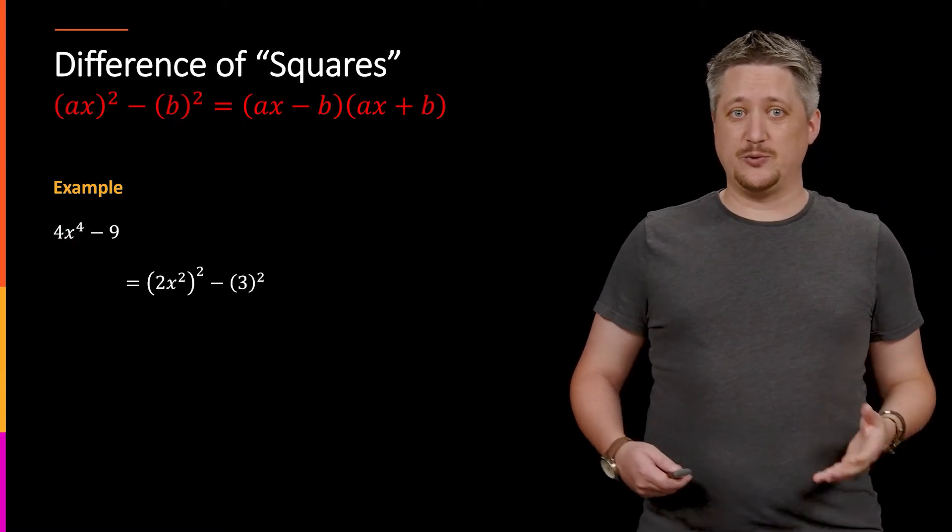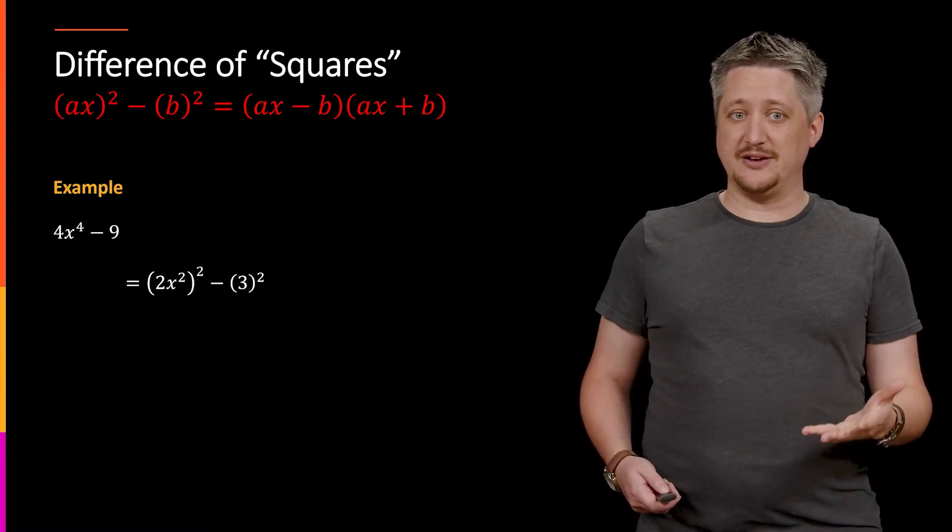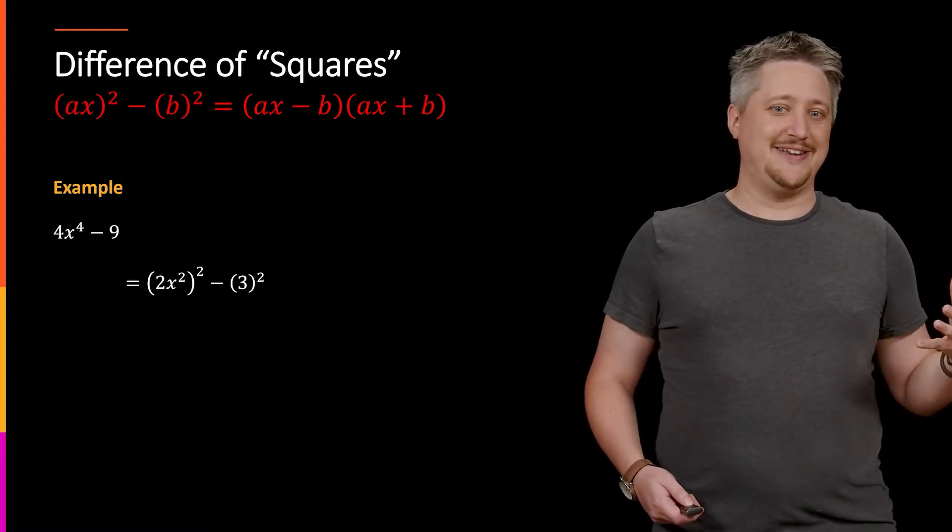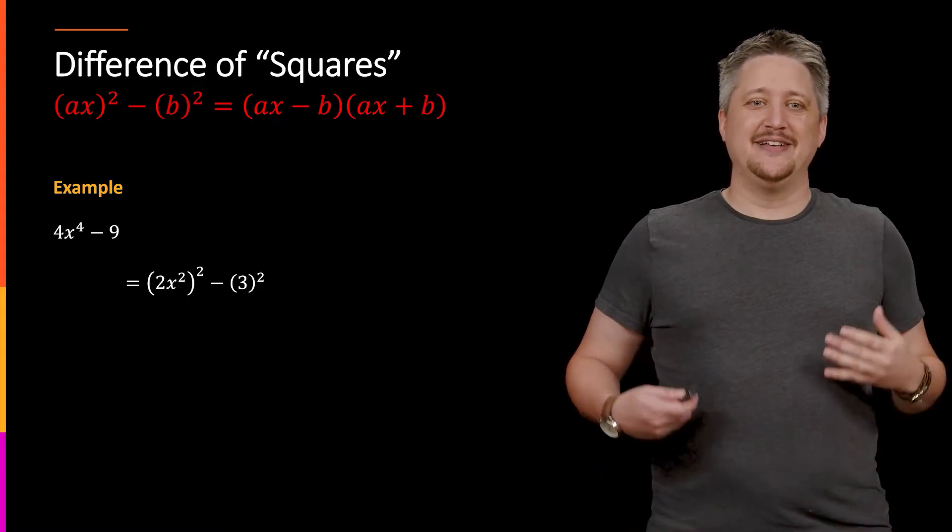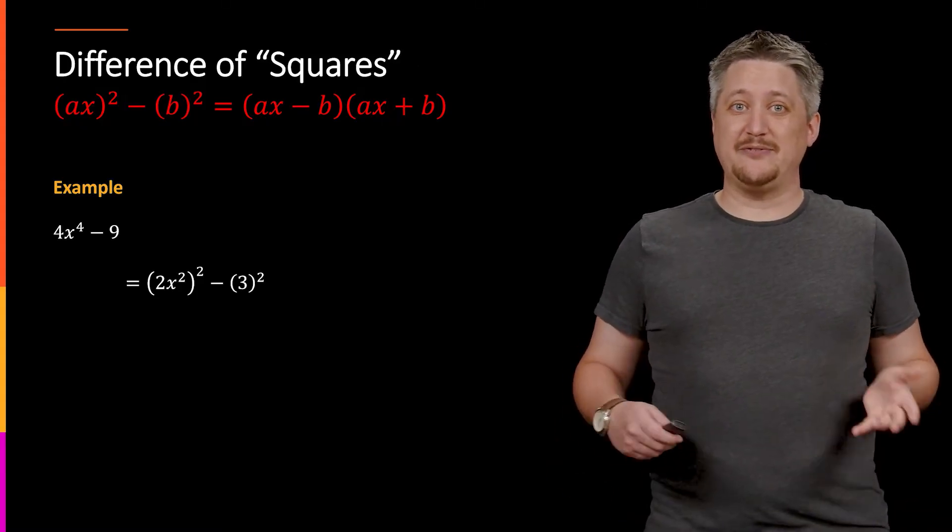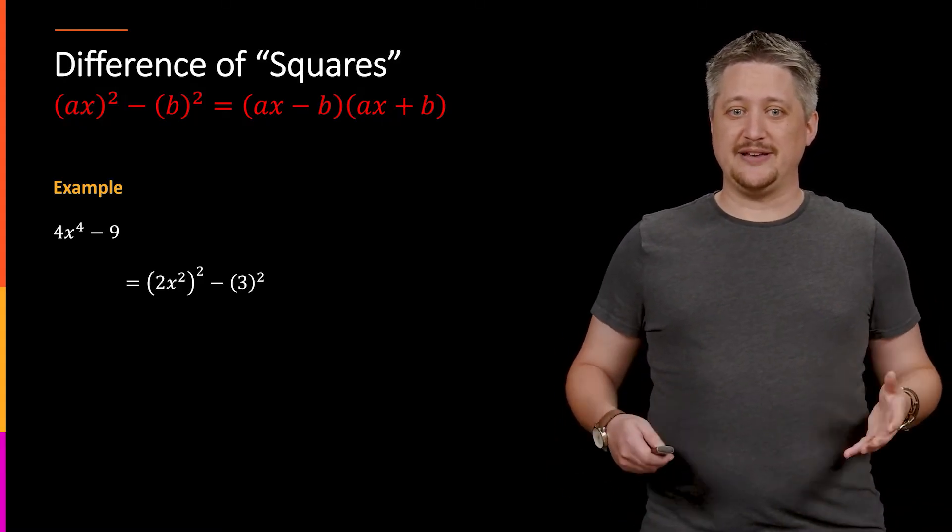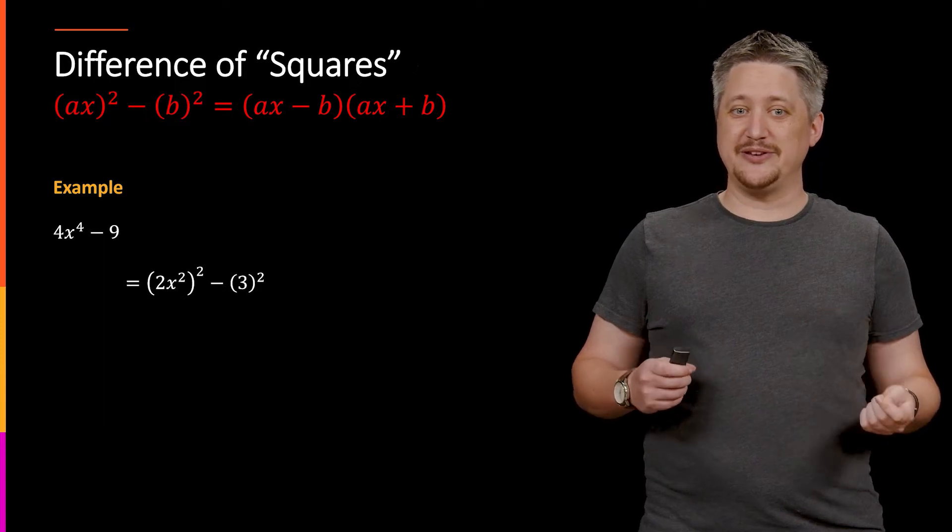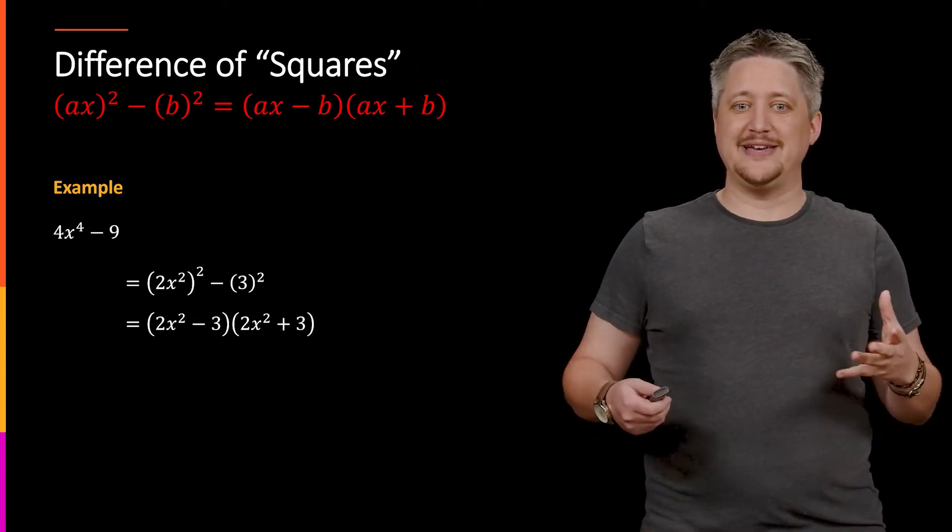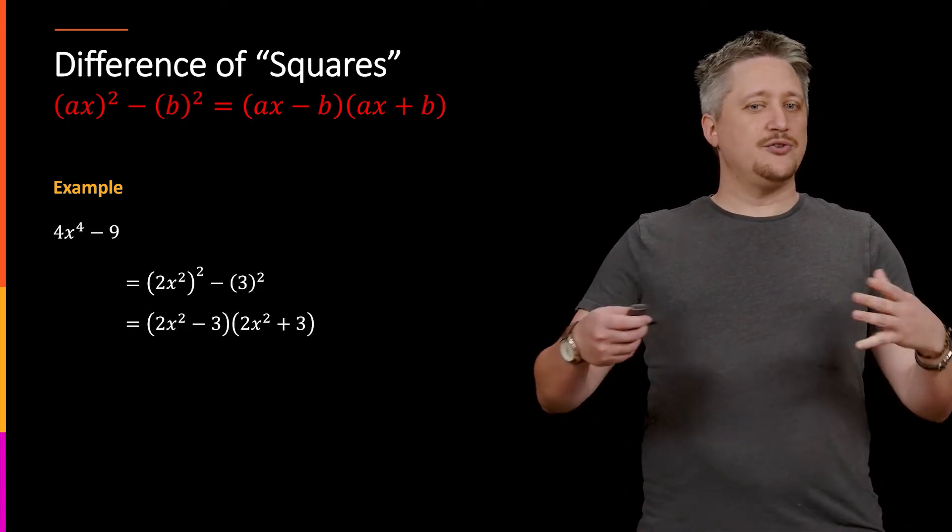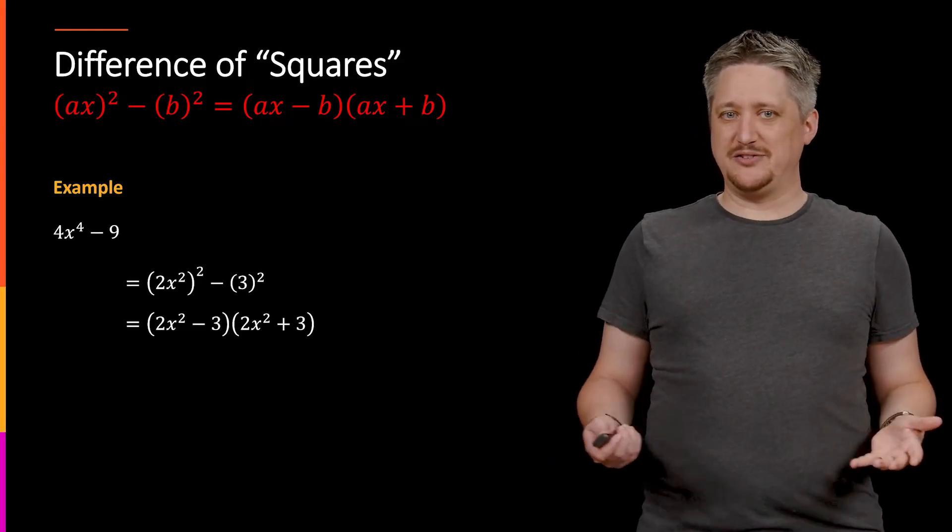So again, I'm going to write this as something squared minus something squared. So in this case, now (2x²)² and (3)². That gives me my a and b for that formula, so I can take the difference of those two things and the sum of those two things that gets me here. So far so good, everything's worked the same way.